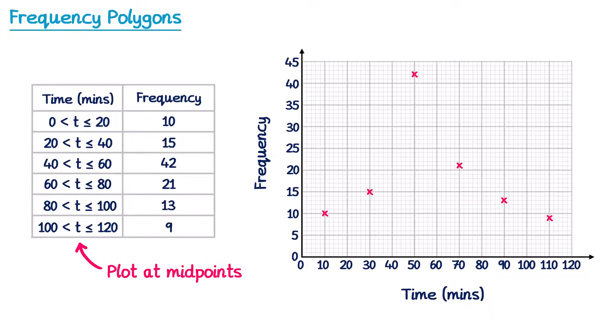To complete your frequency polygon, we're going to connect up all these crosses, starting at the left and finishing on the right, using straight lines. So it'll look something like this.